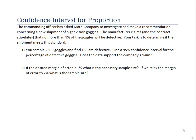In this example we're going to find a confidence interval for proportion. In the problem we're going to pretend that we're a math company and the commanding officer has asked us to investigate a claim made by a manufacturer of night vision goggles. The manufacturer claims that only 5% of the goggles are defective and our task is to determine if that claim is actually true.